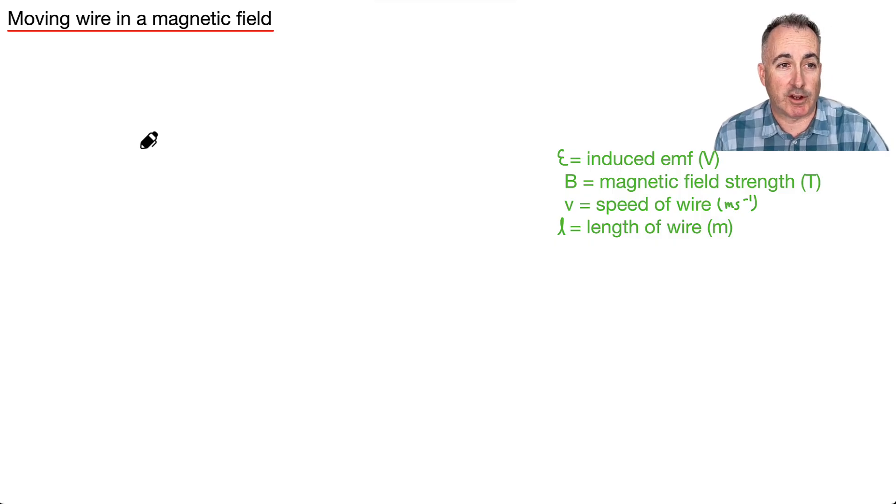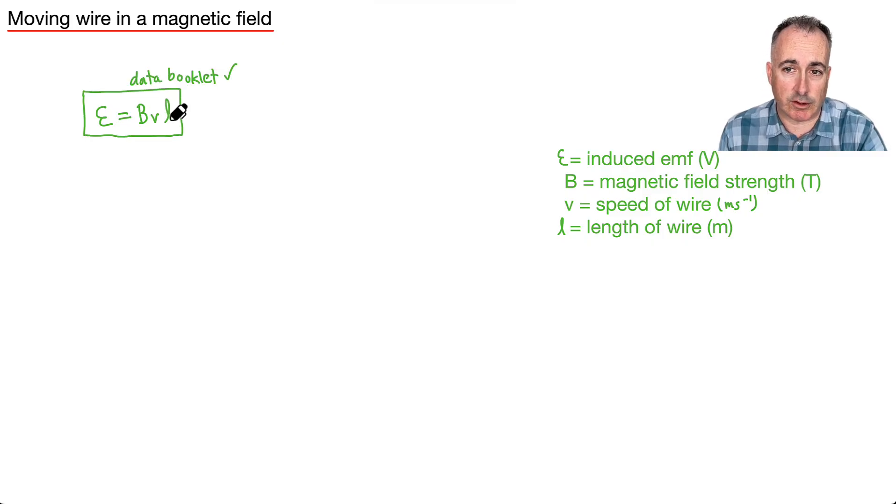Now we have an equation for if there is a wire that's moving in a magnetic field, then it goes like this. The induced EMF is going to be just B, V, L. That's our equation. Okay, so E, this epsilon, that's the induced EMF that's in volts. B is the magnetic field strength in Teslas. V, this lowercase V, that's just the speed of the wire, and L is the length of the wire. And that's it.